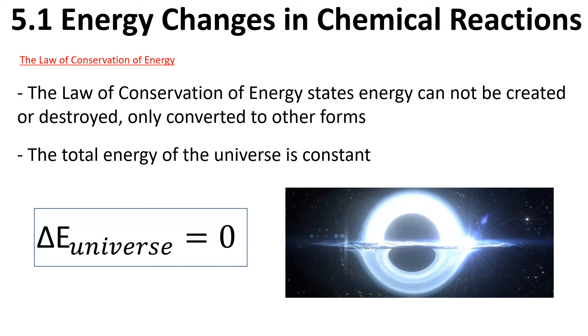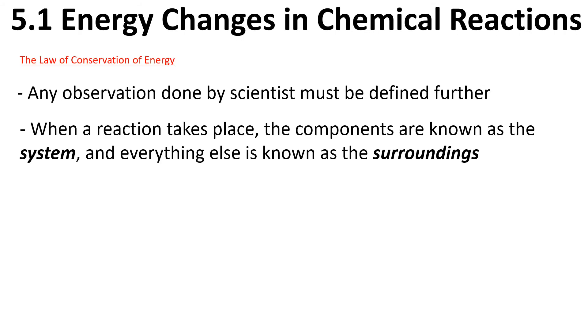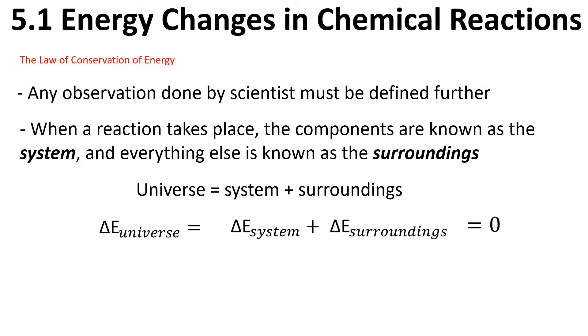Energy is really just getting converted between one form to another. Any observation done by scientists must be defined further. When a reaction takes place, the components are known as the system, and everything else is known as the surroundings. Essentially, our universe is equal to the energy from our system plus the energy from our surroundings. The change in the energy of the universe would be equal to the change in our system plus the change in surroundings, but in the end this is all equal to zero.